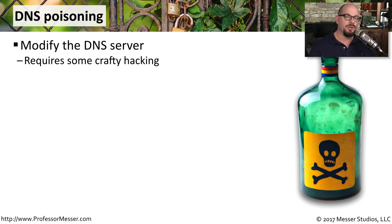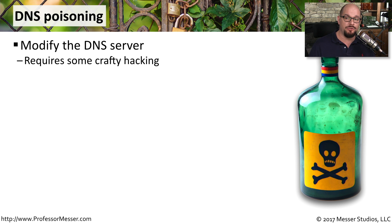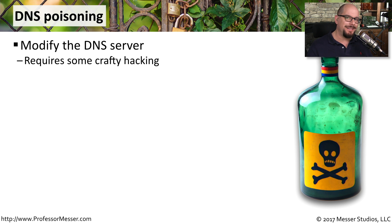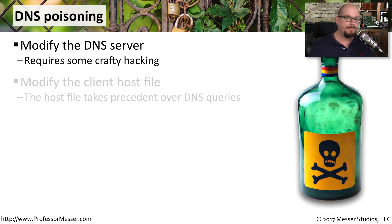The domain name services are a critical part of our IP networking. These are the servers that take the names we provide and give us IP addresses in translation. If you're able to modify the information in the DNS server, if you were able to manipulate the information inside of this DNS server, then you could potentially send someone to an IP address that isn't necessarily where they thought they were going.